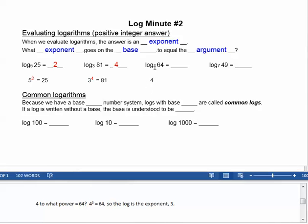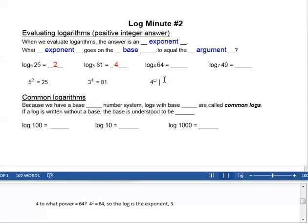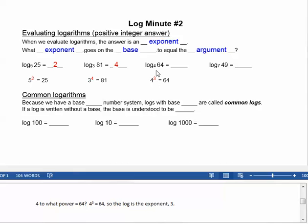4 to what power equals 64? Well, 4 cubed is 64, so the log is the exponent, 3.